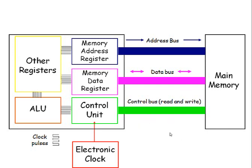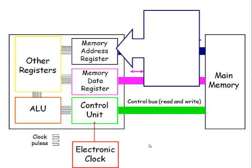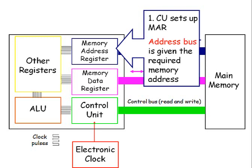We're going to go through one of the operations here. In both operations the first task is the same — whether you're reading or writing, we need to know where we're going to do that operation. So the first thing that needs to happen is the control unit sets up the MAR so that the address bus has the exact address location that needs to be accessed in main memory.